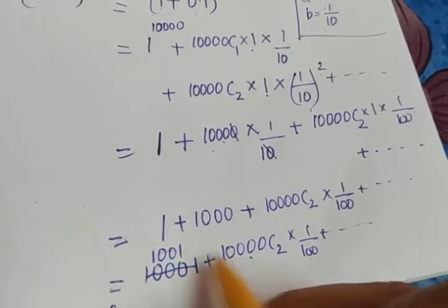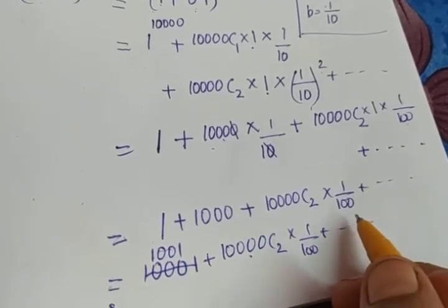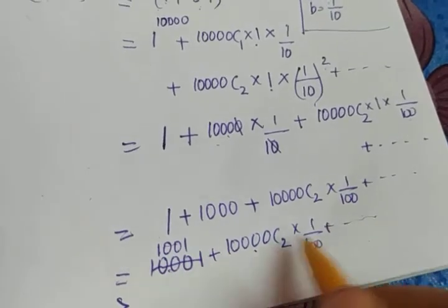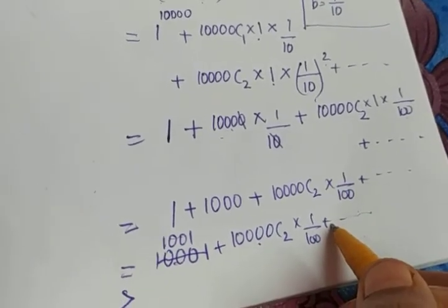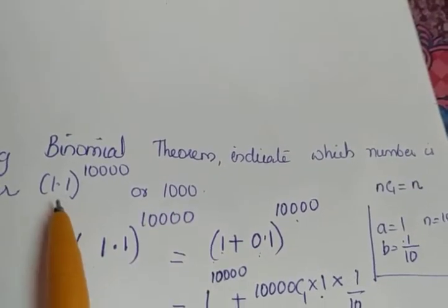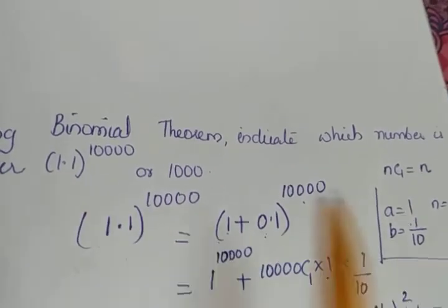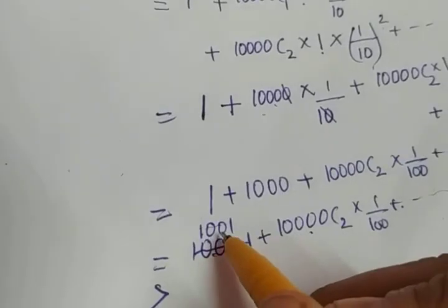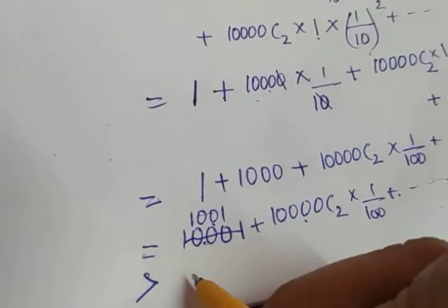So 1001 plus some positive numbers will be a value greater than 1001. It's sure that this value will be a greater value, which is 1001. But what we have to compare is we have to compare these two values. We took 1.1 raised to 10,000 and we got it is greater than 1001, so obviously it is greater than 1000.